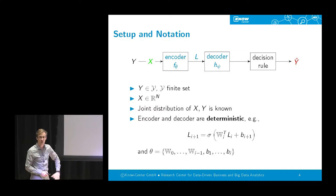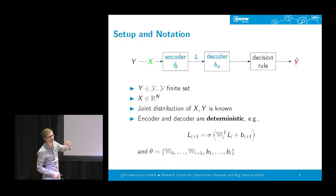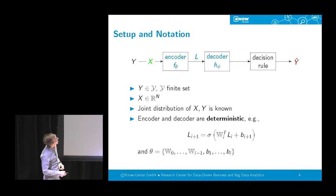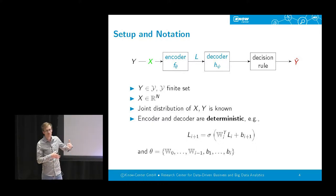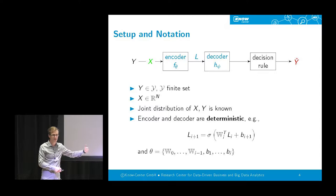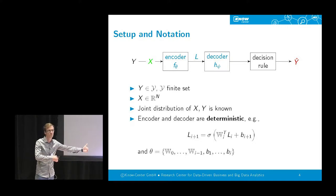We simplify the analysis by assuming we know the joint distribution between features and class, so we don't need to worry about sample complexity bounds or finite sampling effects. We assume encoder and decoder are deterministic functions: multiplication by a weight matrix, adding a bias term, then applying an element-wise nonlinear activation function. The encoder parameters are the weight matrices and bias vectors up to the latent representation, and the decoder parameters are the remaining network parameters.